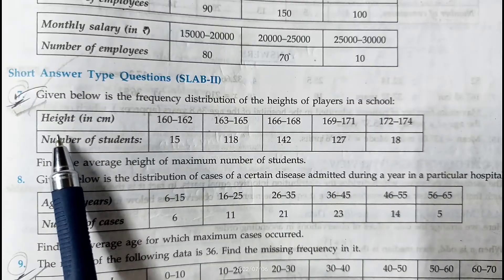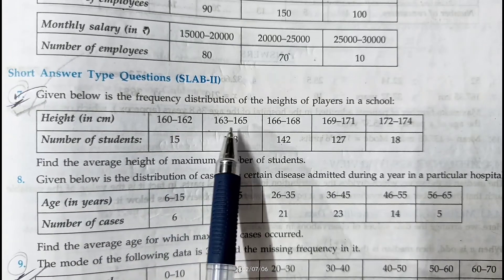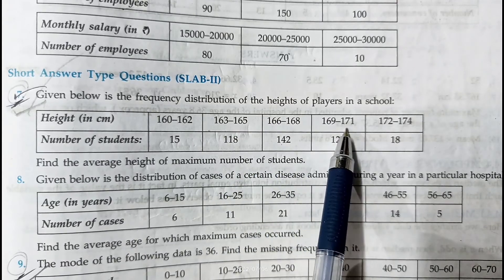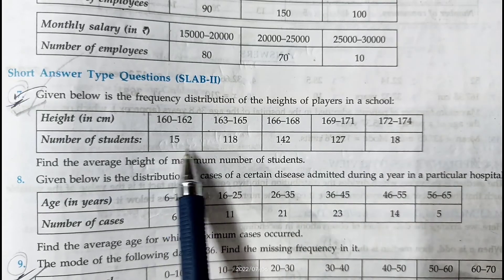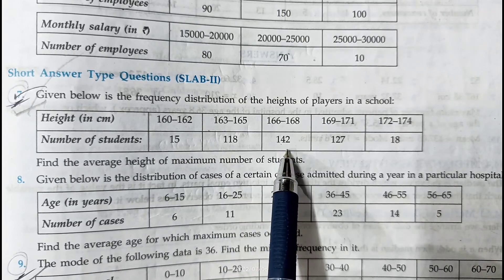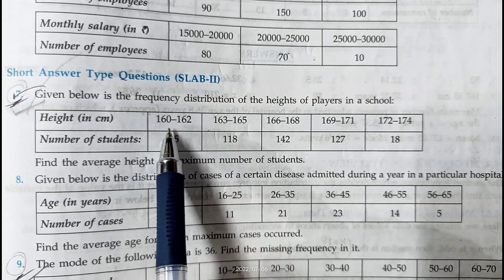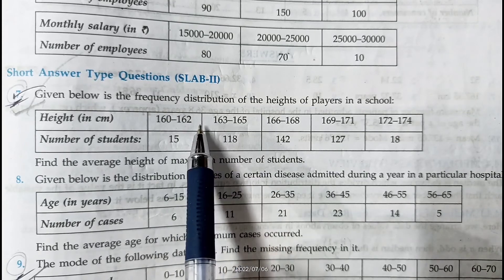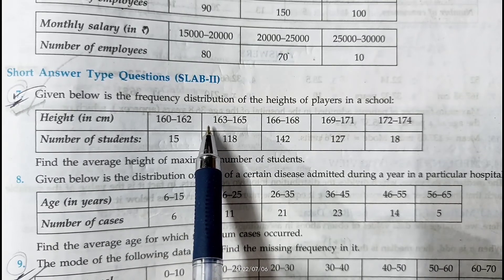In question number 6 — the same question appeared in exercise 14B for mode — we now calculate the median. The data gives height in centimeters: class intervals 160 to 162, 163 to 165, 166 to 168, 169 to 171, and 172 to 174. This table is not continuous because the first interval ends at 162 but the second starts at 163.